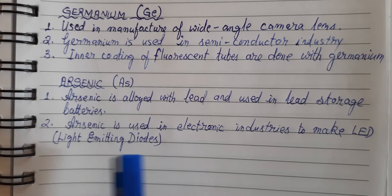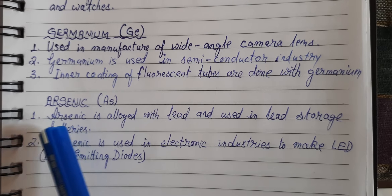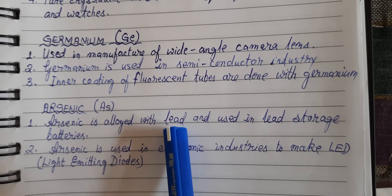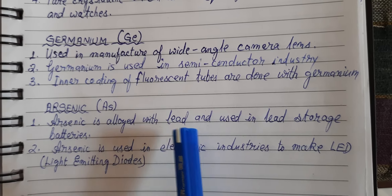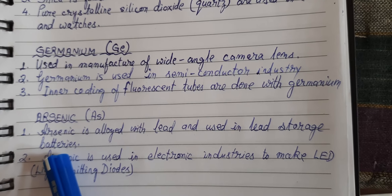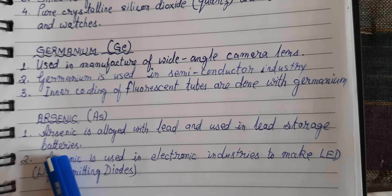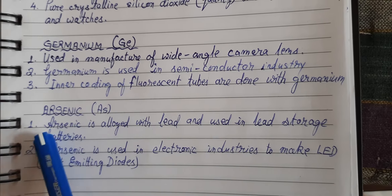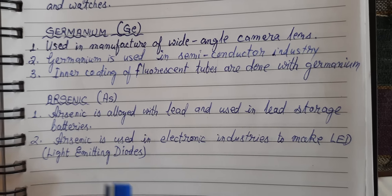The next metalloid is arsenic. Arsenic is alloyed with lead to increase the capacity of lead. This lead alloyed with arsenic is used in lead storage batteries, such as inverter batteries. The body of those batteries is made with lead alloyed with arsenic, which makes it very hard.